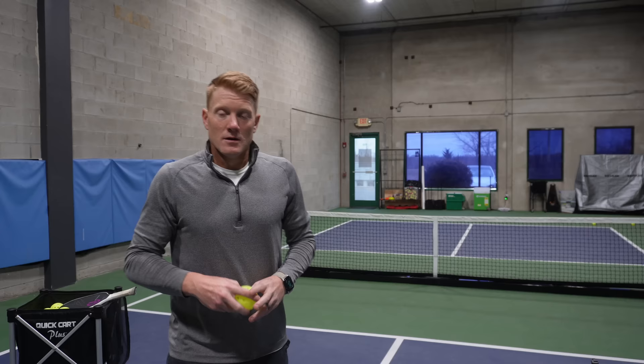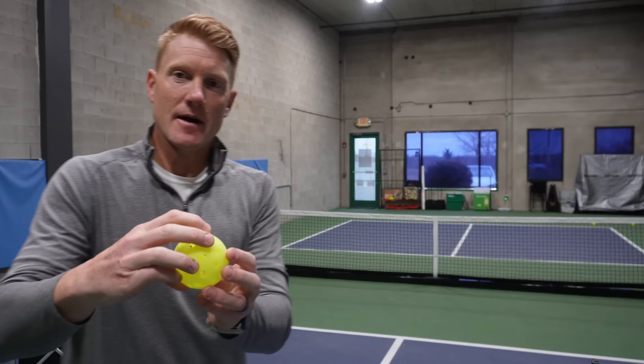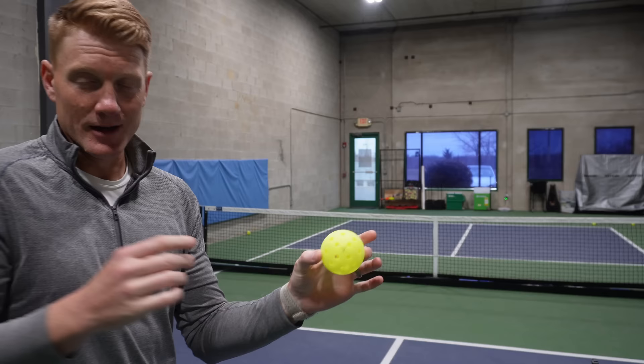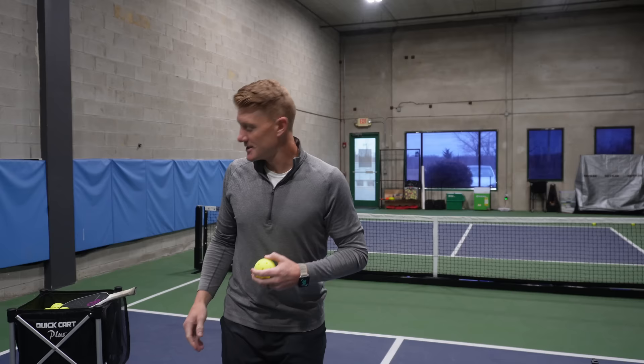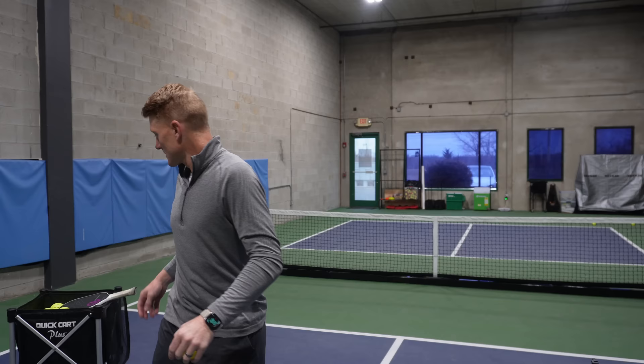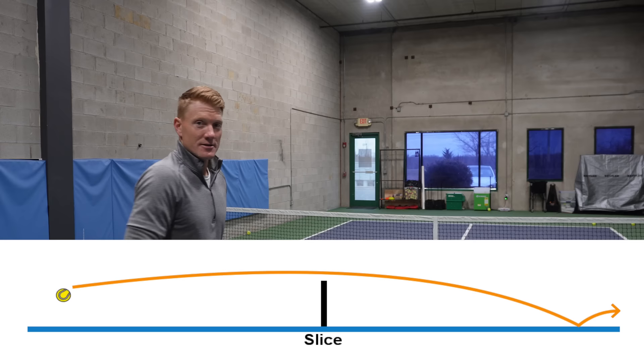The second main type of spin is called underspin, and it's just the opposite. The ball is going to be rolling backwards towards you after you hit it. It's going to have all the opposite properties of ball flight: the ball is going to want to stay a little bit lower initially, it's going to want to float more, and when it bounces, it's going to skid and stay lower. Underspin stays lower, stays on a flatter plane longer, and when it bounces, it's going to bounce lower.